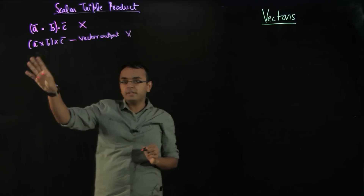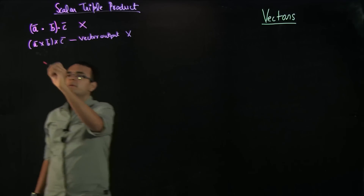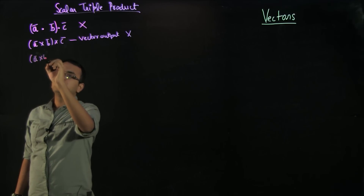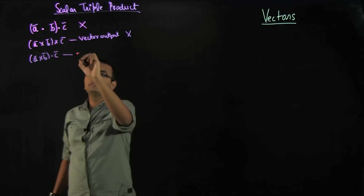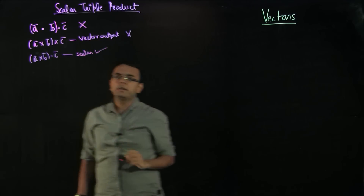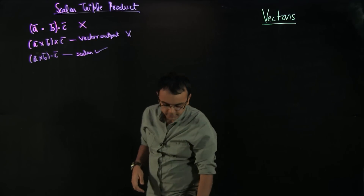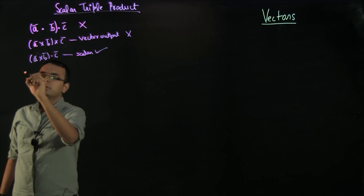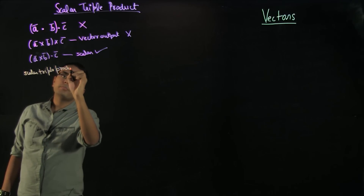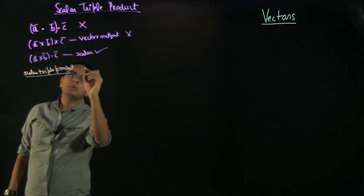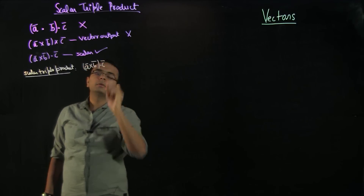We will discuss what kind of product A×B×C is in the next video, but it gives a vector output, so it is not what we want. However, we can do A×B·C. Here A×B is a vector, then dotted with another vector C, and this gives a scalar output. So scalar triple product is defined as A×B·C.